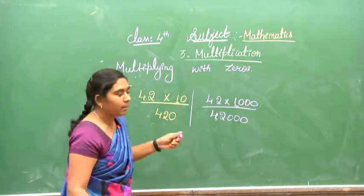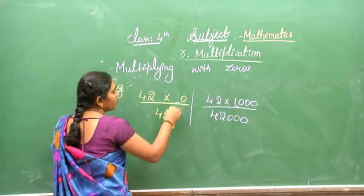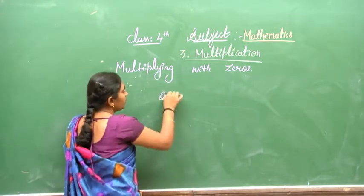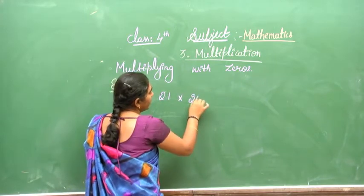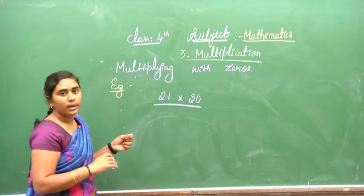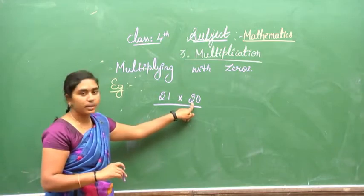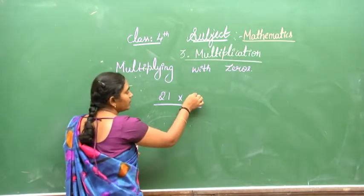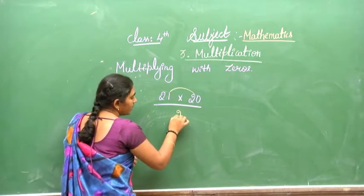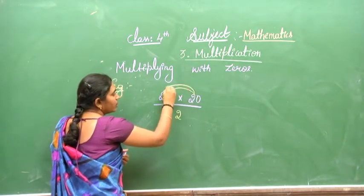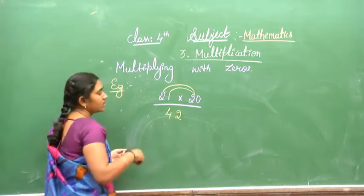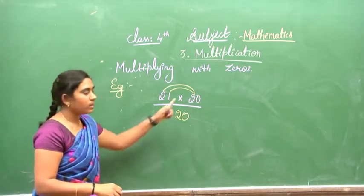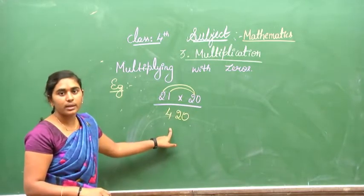If there is a number instead of just a trailing zero — for example, 21 multiplied by 20 — in that case we multiply with 2 first. 2 times 1 is 2, 2 times 2 is 4, and we append one zero. So write the zero.